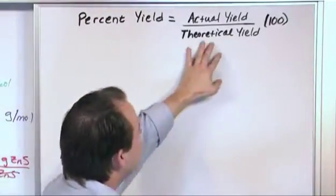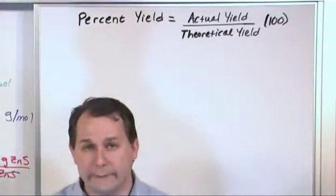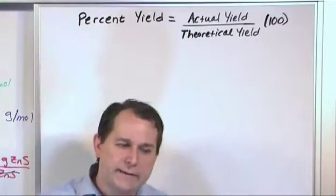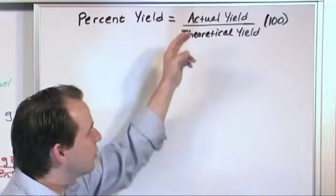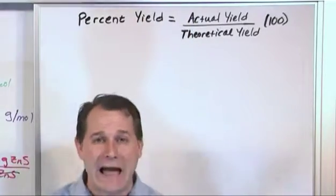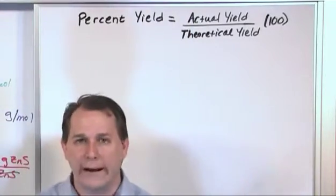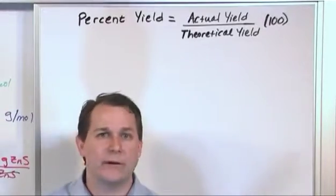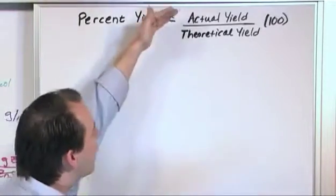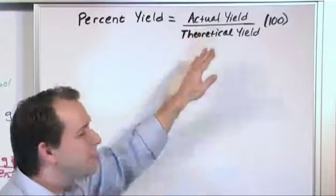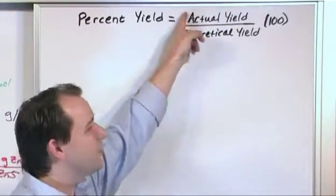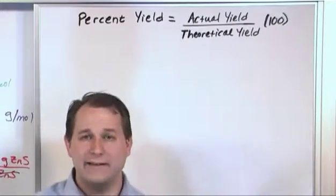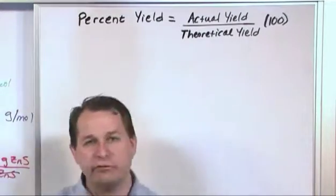So for instance, if your theoretical yield is two grams of something, you expect to actually make two grams of water or something, maybe your actual yield isn't quite two grams. Maybe your actual yield is like 1.94 grams. Maybe that's what you actually measure. That's why it's called actual. So you take the 1.94, you divide by the two, and since the bottom number's always bigger than the top number, you're always going to get a decimal. So then you multiply that by 100, and you're going to get a percent.